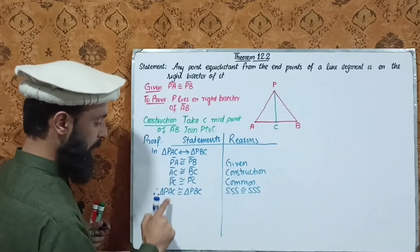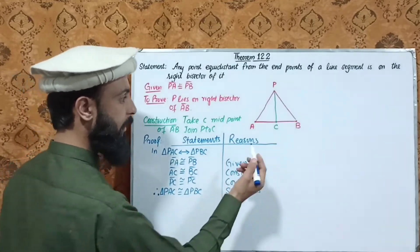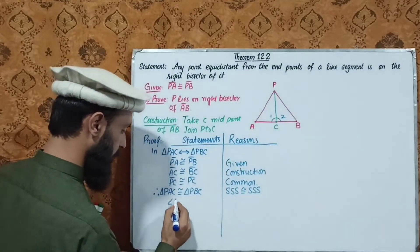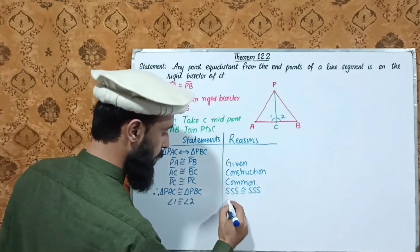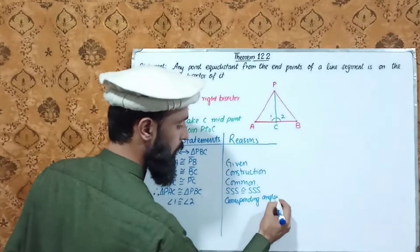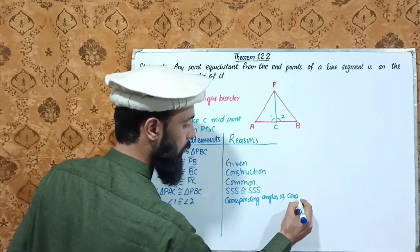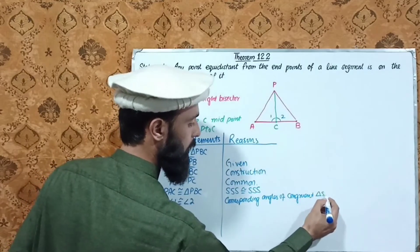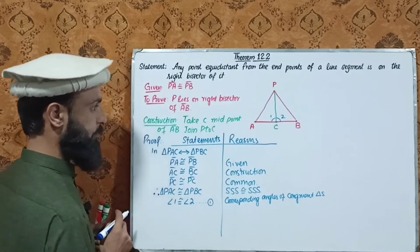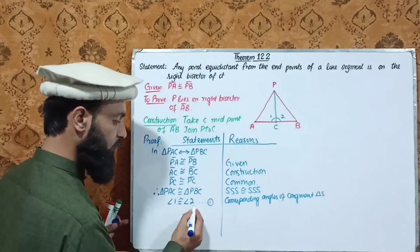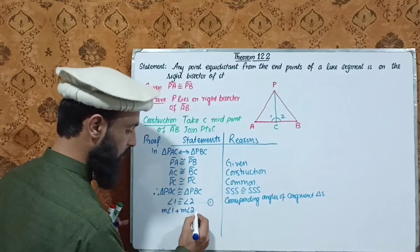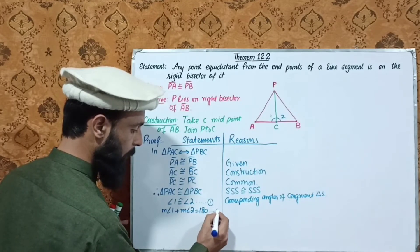Angle 1 and angle 2 are corresponding angles of congruent triangles. Also, the measurement of angle 1 plus measurement of angle 2 equals 180 degrees — this is statement number two, since they form a straight angle.